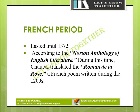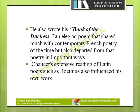The French period lasted until 1372, according to the Norton Anthology of English Literature. During this time, Chaucer translated the Roman de la Rose, a French poem written during the 1200s, as the Romance of the Rose. He also wrote his Book of the Duchess, an elegiac poem that shared much with contemporary French poetry but also departed from it in important ways. Chaucer's extensive reading of Latin poets such as Boethius also influenced his own work.